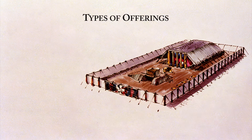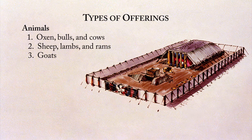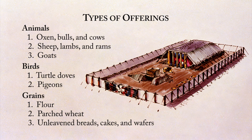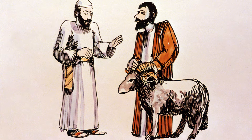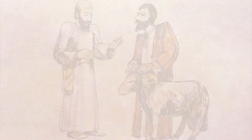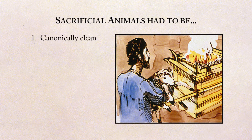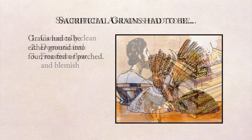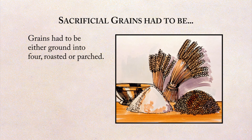The offerings fall into three divisions: one, animals of the flock or herd; two, certain birds; and three, grains or products made of grain. The latter, called meat offerings, were also offered with olive oil and frankincense. To be acceptable as sacrifices, the animals had to meet specific criteria. First, they had to be one of those which God had declared to be clean, and which could also be used as food. Second, they had to be domesticated. And third, they had to be free from physical flaws. The grains had to be either ground into flour, which in turn could be used to make breadstuffs, roasted or parched.